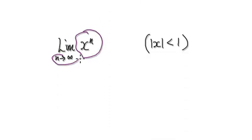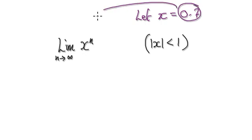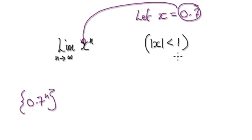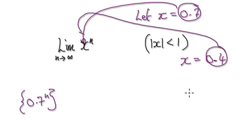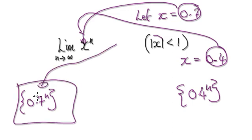In this video we're going to try and find the limit of this sequence as n tends to infinity, where x is between negative 1 and positive 1. For example, you could say let x equal 0.7, and you would put this into here — that would be one sequence. Or you could let x equal 0.4, giving you 0.4 to the power of n. X varies, but once you've selected your x, it stays fixed and is really considered as a constant.